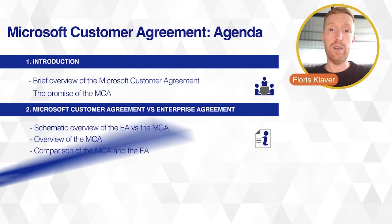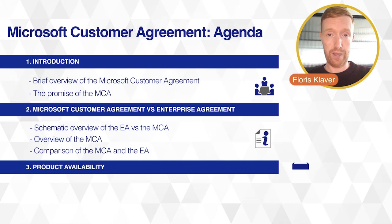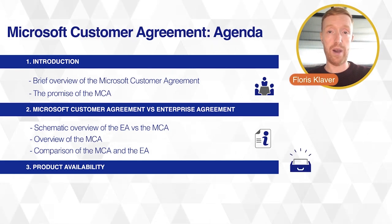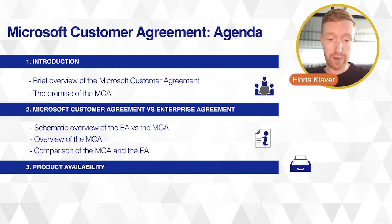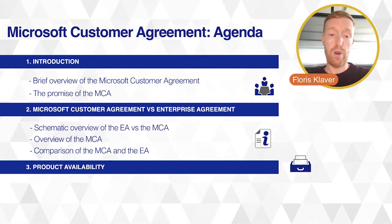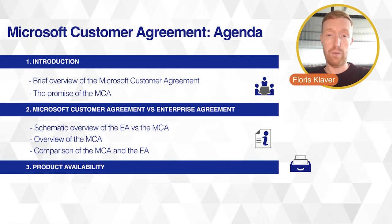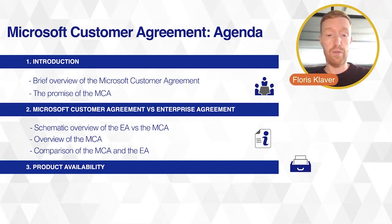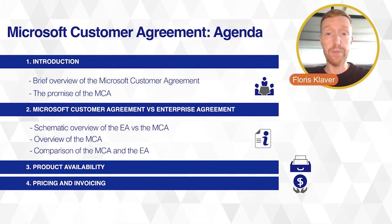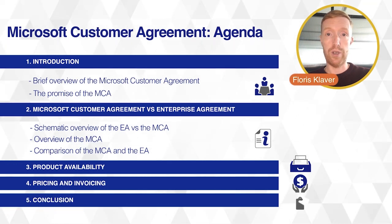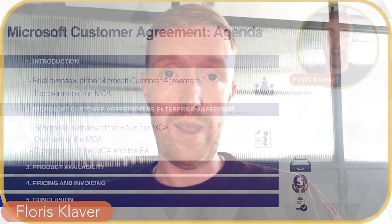Next, going to product availability — what can you buy in the MCA and how does it differ from what is already out there? We want to wrap up with some more information about pricing and invoicing and have a small conclusion at the end where we bring it all together.